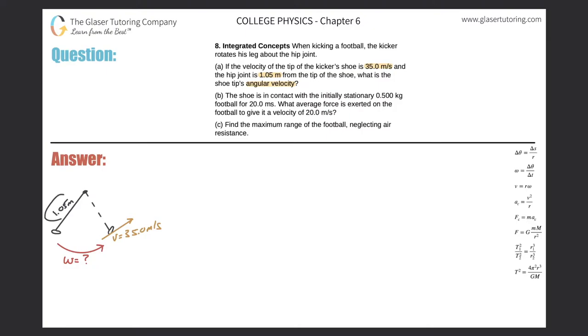We have to figure out how to relate this distance, which by the way is a radius, because the leg is rotating around a certain point. When something rotates around a point, what shape does it create? It creates a circle.